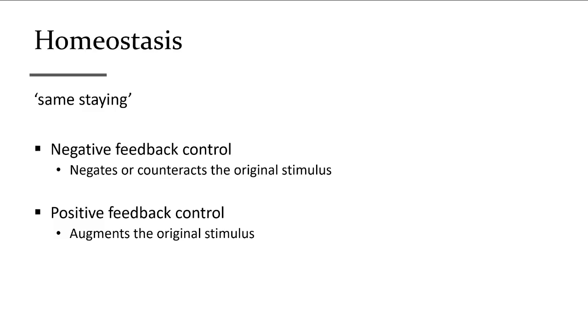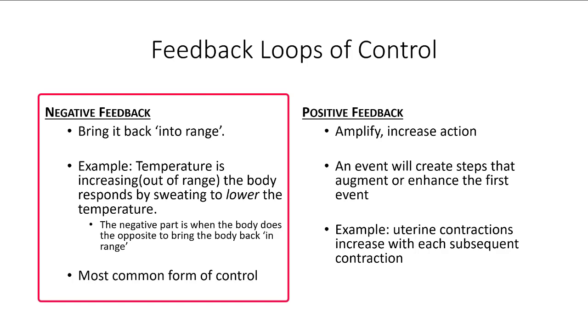On a different topic: homeostasis. The term means same stain. We have two control mechanisms. Negative feedback, which is used predominantly, is counteracting the original stimulus. If you get hot, you sweat and cool down. That's negative feedback control. Positive feedback control is pretty rare. It's utilized in certain processes like labor or blood clotting.